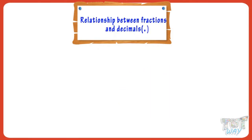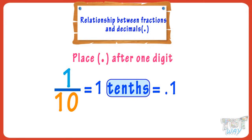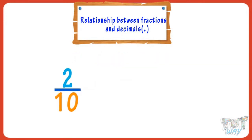What is the relationship between fractions and decimal numbers? 1 by 10 equals 1 tenth equals 0.1. When it's tenths, you have to place decimal after one digit from left. 2 by 10 equals 2 tenths equals 0.2.